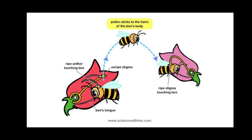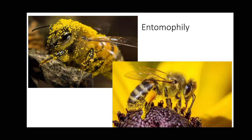Through simple modifications of the flower, the plant is able to make an animal disperse pollen from one flower to the next. This method is known as insect pollination and is called the entomophily method. The real image here shows a bee whose body surface is completely covered with pollen, demonstrating how it pollinates the next flower it visits.